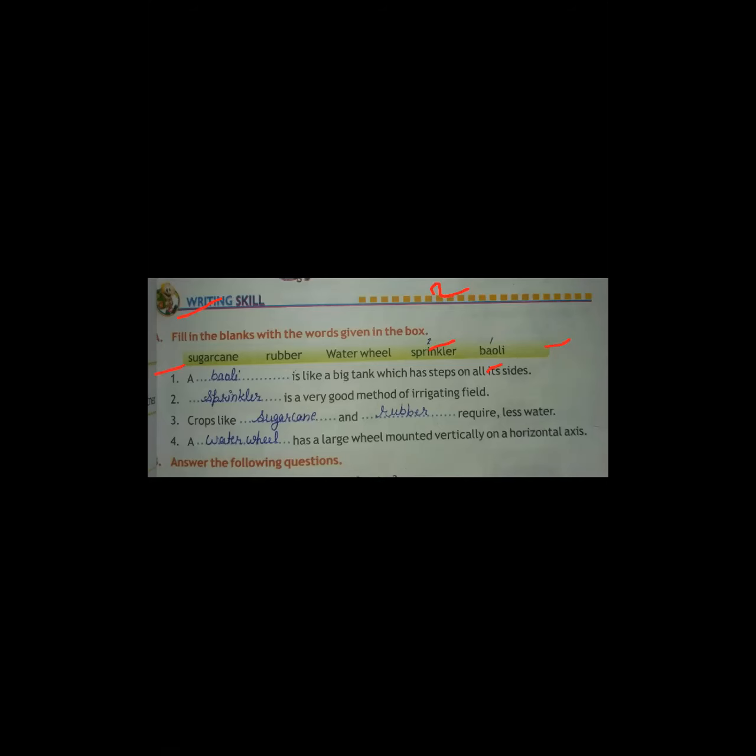Third: crops like blank and blank require less water. The answer is sugarcane and rubber. Rubber spelling is R-U-B-B-E-R.